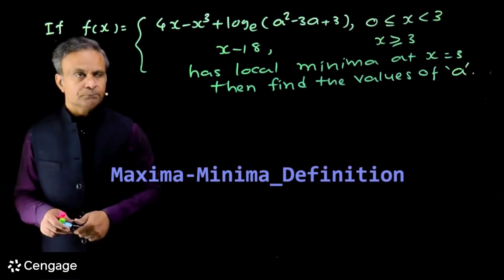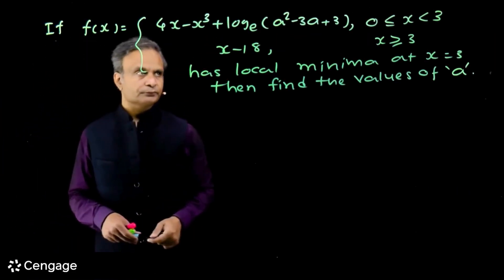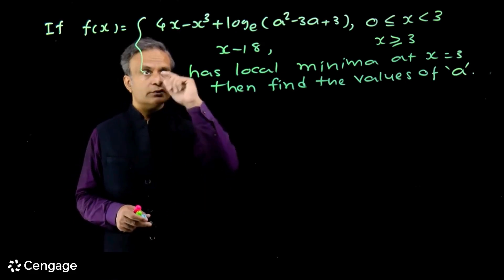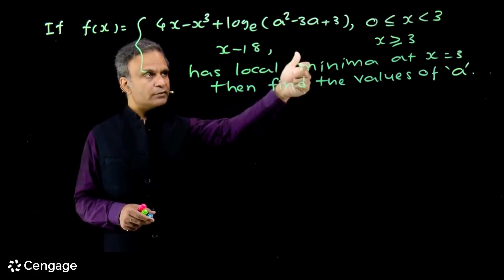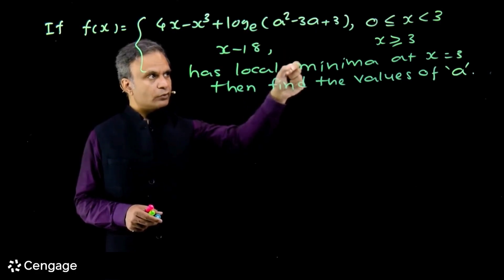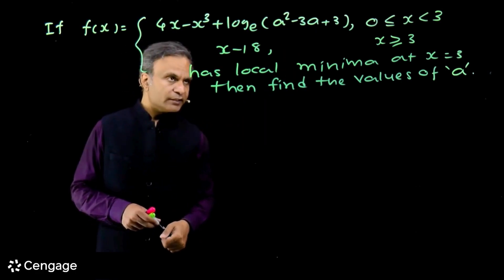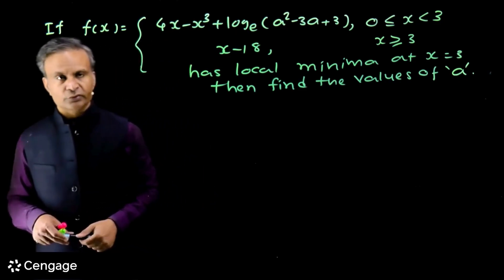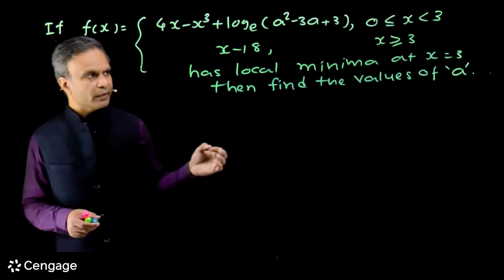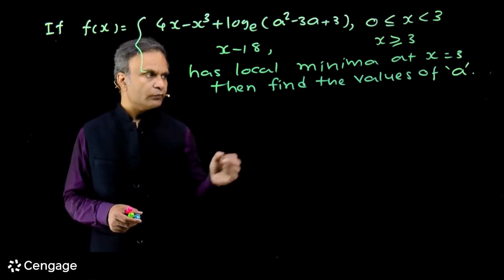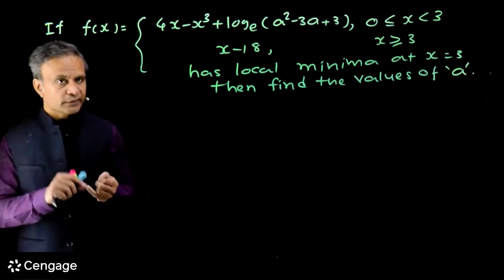We have a piecewise definition of a function: f(x) = 4x minus x³ plus log(a²−3a+3) for 0≤x<3, and x−18 for x≥3. If this function has a local minima at x=3, then we have to find the values of a.